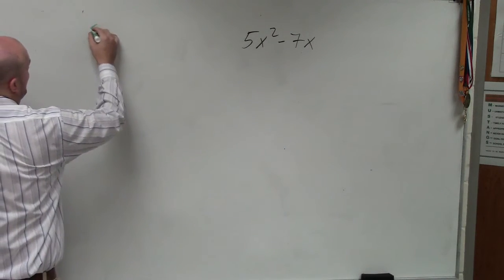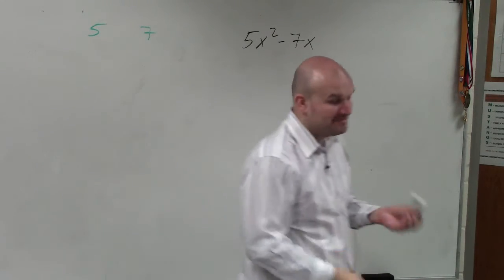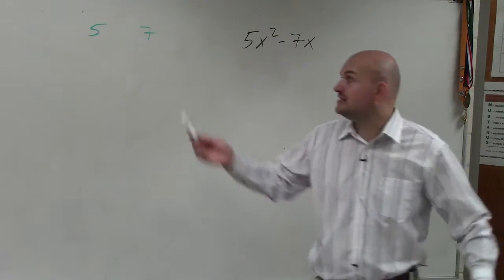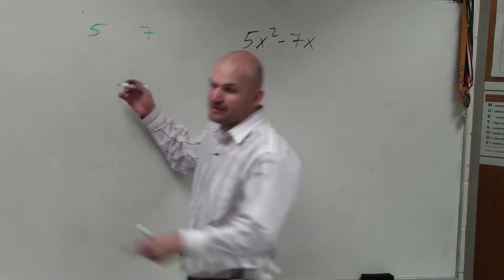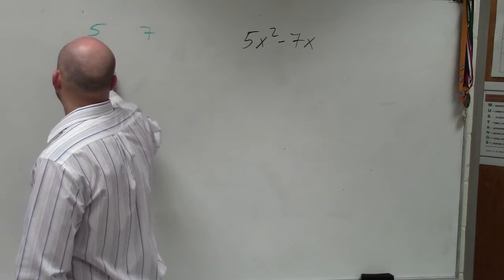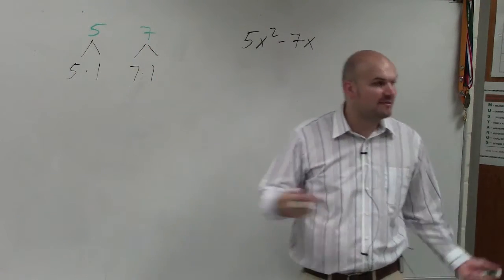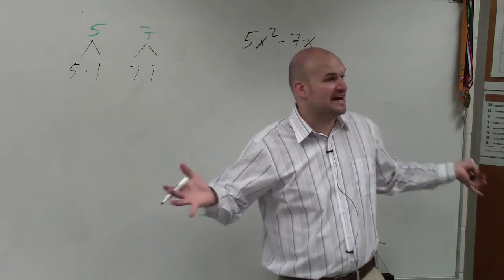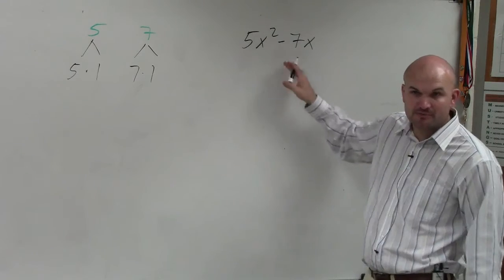So first thing we look at is our numbers, and we want to see is there any common number besides 1 that evenly divides into 5 and evenly divides into 7? Well, no, because if you did in the first box, if you guys were to break those down, what you would know is 7 and 5 are both prime numbers. So they don't have any factors besides 1 and themself. So therefore, there is no common factor between 5 and 7.